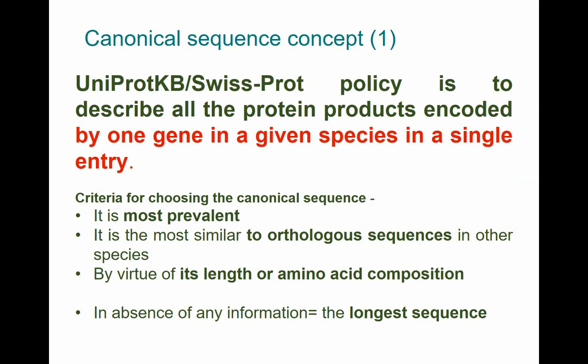There is a policy set about 20 years ago by the head of SwissProt, Amos Bairoch, that only one gene in a given species will have a single entry. How do you deal with 10 or 20 alternative splicing variants? They are all variants of the same entry. You don't expand the number of entities - you leave a gene as a gene and have one variant per gene locus. You can still see all the variants, but this is the decision.